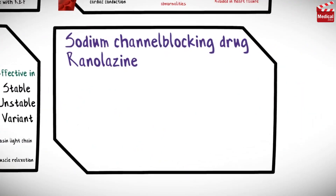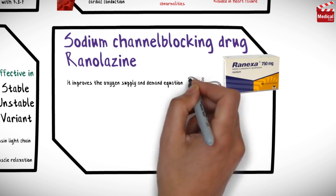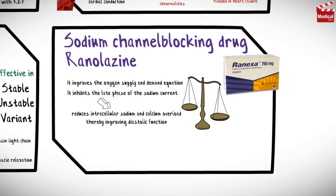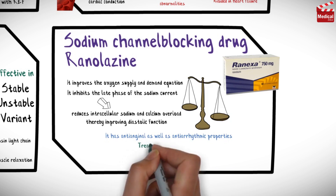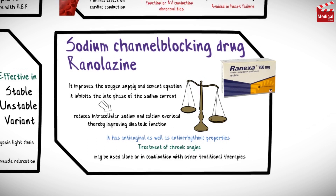Finally, the sodium channel blocker ranolazine improves the oxygen supply and demand equation. It inhibits the late phase of the sodium current, reducing intracellular sodium and calcium overload, thereby improving diastolic function. Ranolazine can be used for angina and also has antiarrhythmic properties; it is indicated for chronic angina and may be used alone or in combination with other traditional therapies.